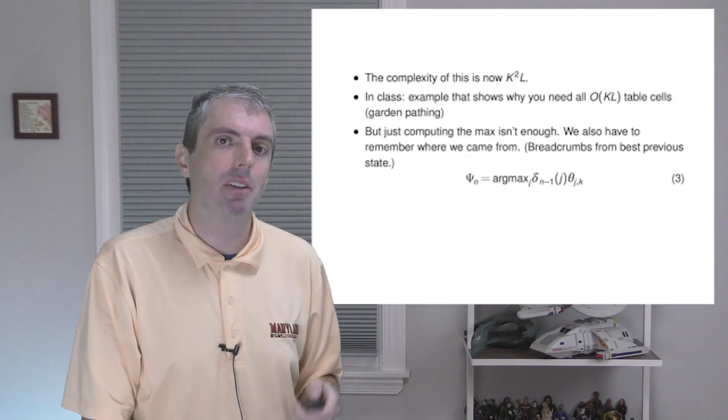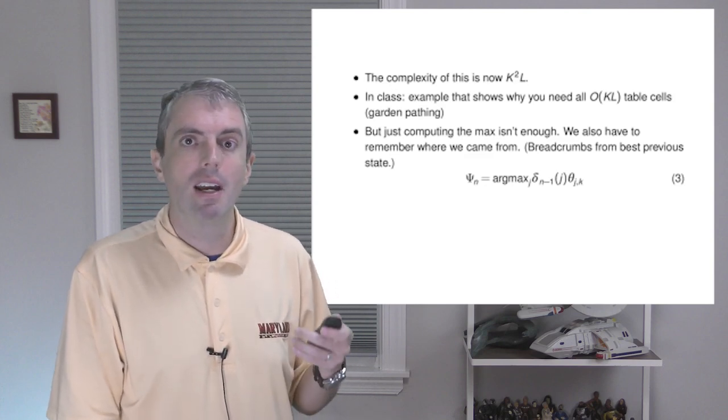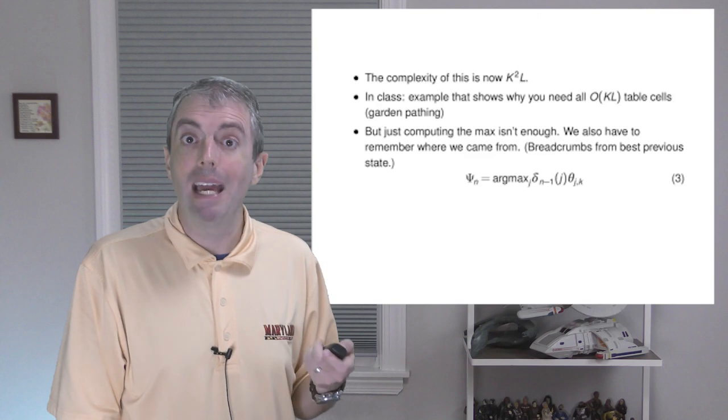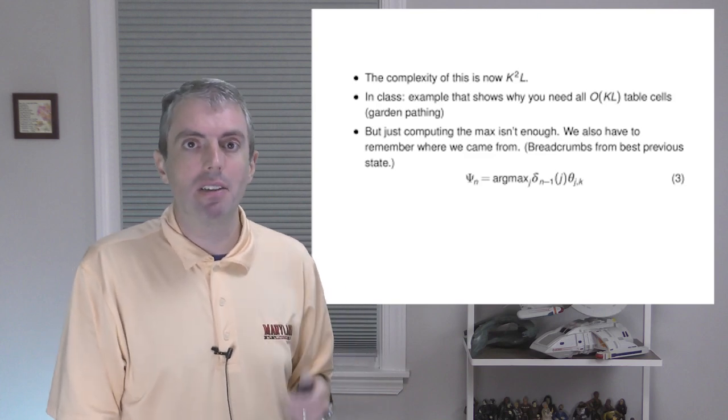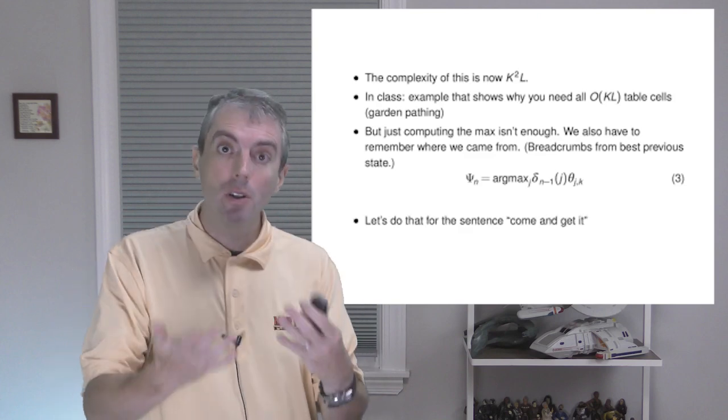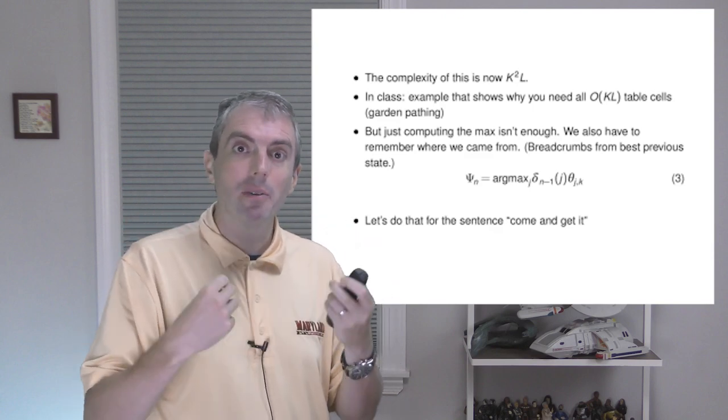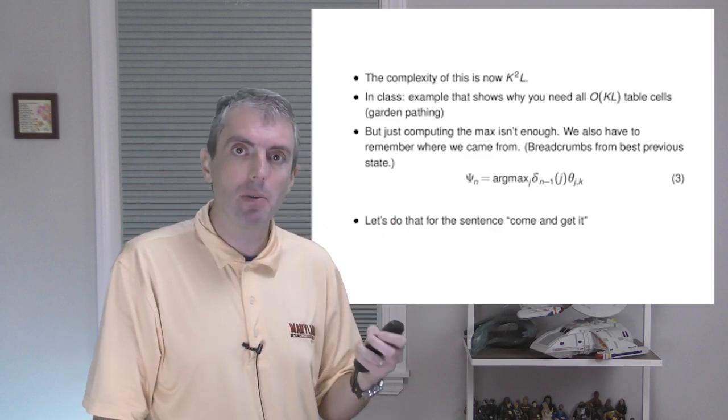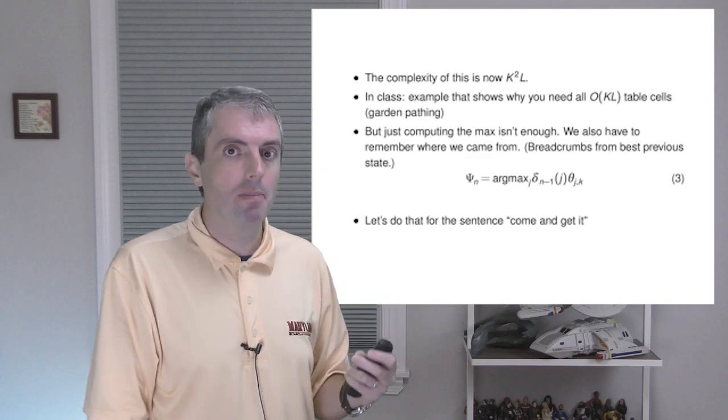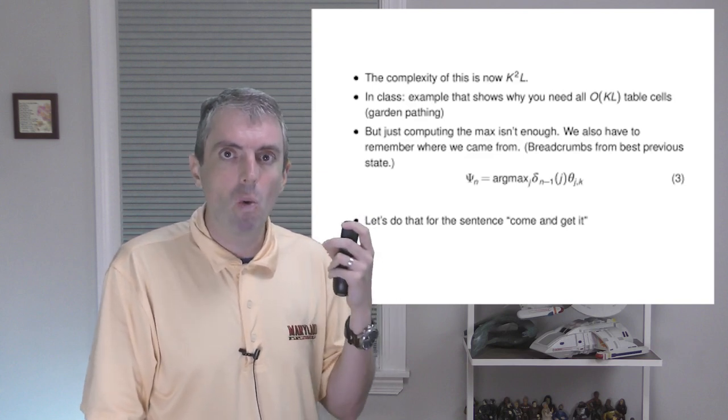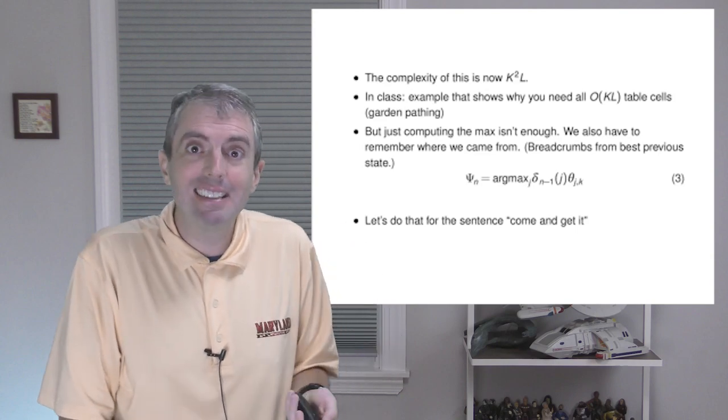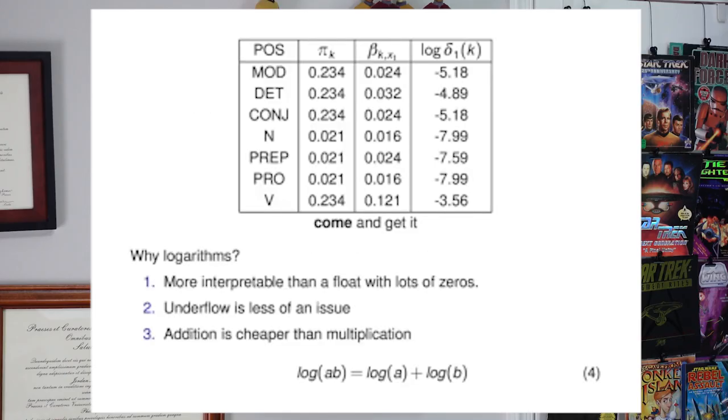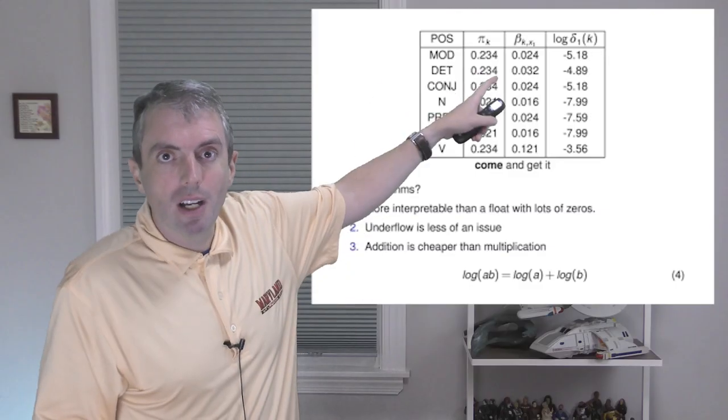So now let's look at an example of figuring out the optimal part-of-speech sequence for the sentence come and get it, given the hidden Markov model that we estimated before. And of course, we need to start with the base case. So we need to figure out what is the best sequence that could get us to each of our part-of-speech tags at time 1. This is easy. We multiply the initial probability pi times the emission probability for that word for each of our part-of-speech tags. This gives us the probabilities that you see in the rightmost column here.